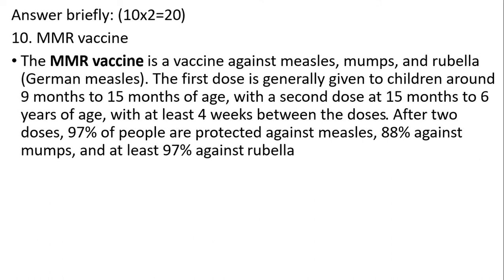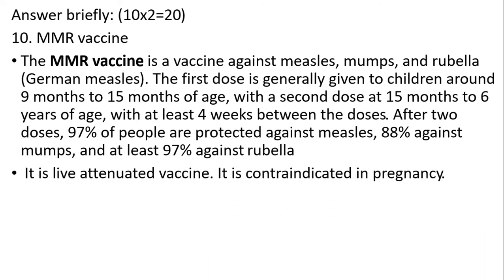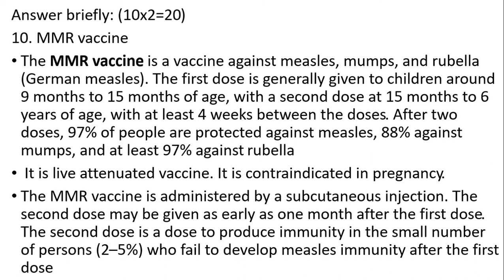MMR vaccine: the MMR vaccine is a vaccine against measles, mumps, and rubella. The first dose is generally given to children around 9 to 15 months of age, with the second dose around 15 months to 6 years of age, with at least 4 weeks between doses. After two doses, 97% of people are protected against measles, 88% against mumps, and at least 97% against rubella. As it is a live attenuated vaccine, it cannot be given during pregnancy. The MMR vaccine is administered by subcutaneous injection. The second dose produces immunity in the small number of persons who fail to develop measles immunity after the first dose.